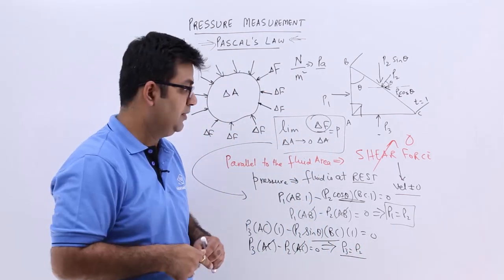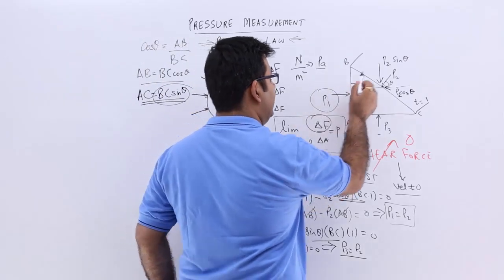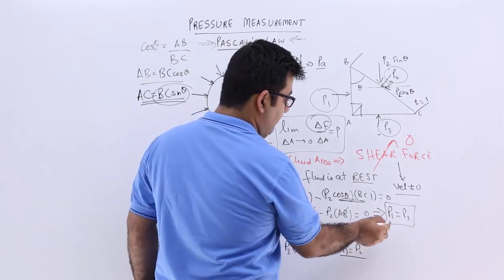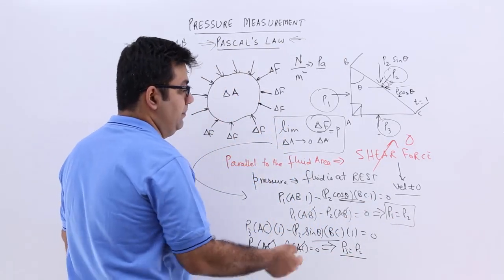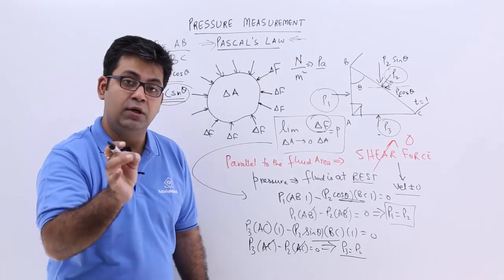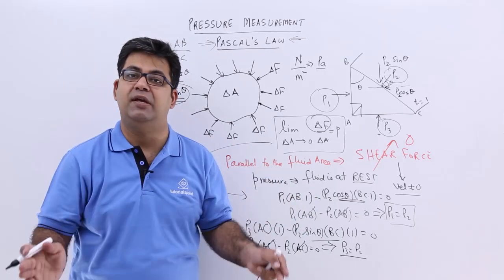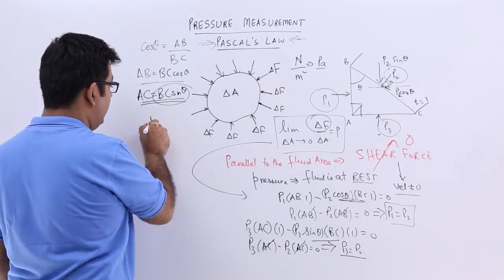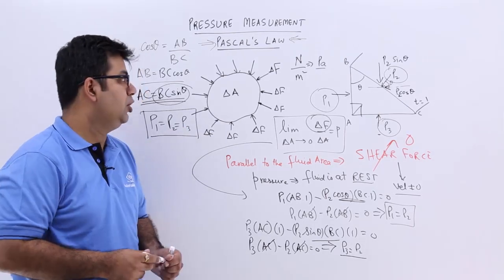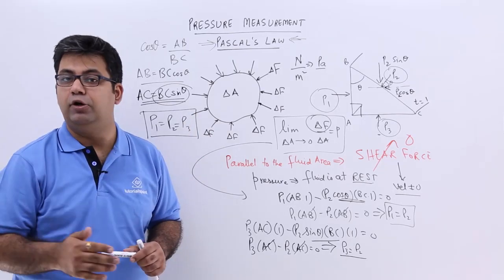We reach a very important conclusion: on a fluid element immersed in a fluid, the pressure from all sides is equal — be it horizontal, vertical, or inclined. P1 equals P2 and P2 equals P3, so P1 also equals P3. Pascal's Law states that on a fluid element totally immersed in a given fluid, the pressure from all directions is the same: P1 equals P2 equals P3. Let's move on to talk about the application of fluid pressure and manometers in the next video.